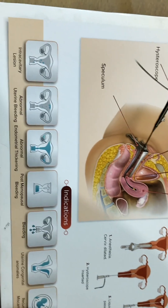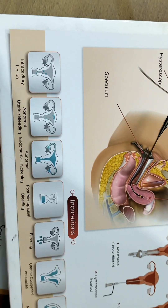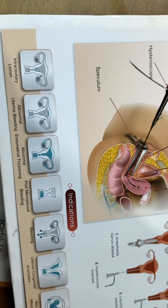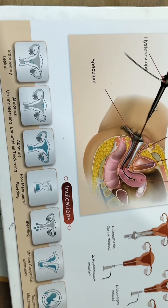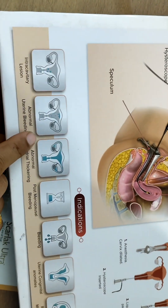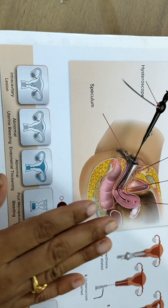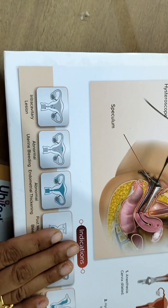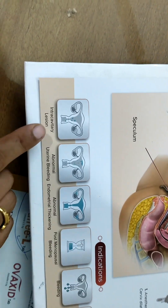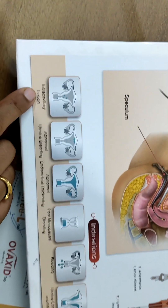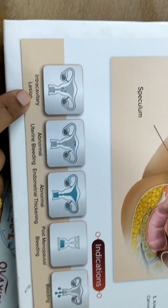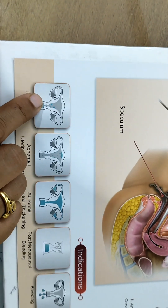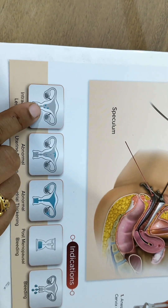The limitation of ultrasound is that it is only a diagnostic procedure — even if a polyp or fibroid is seen, nothing can be done about it. Hence, hysteroscopy is the answer and is the gold standard procedure for diagnosis, offering treatment options as well. The most common reasons for doing hysteroscopy are intracavitary lesions, the most common being polyp and fibroid inside the cavity of the uterus.